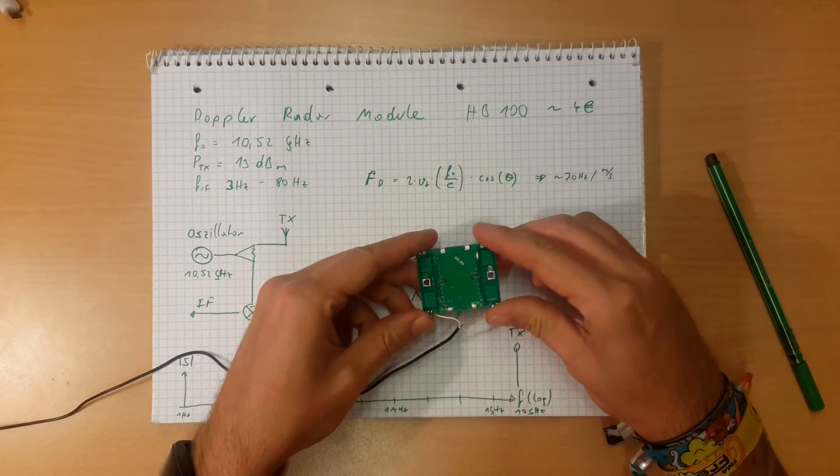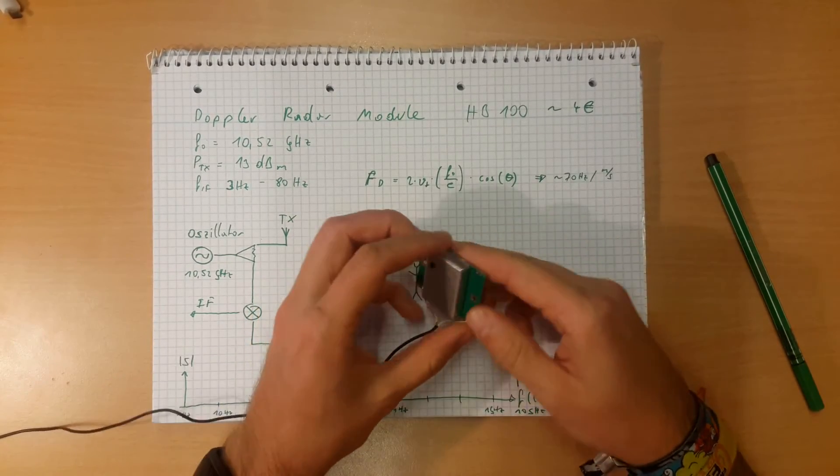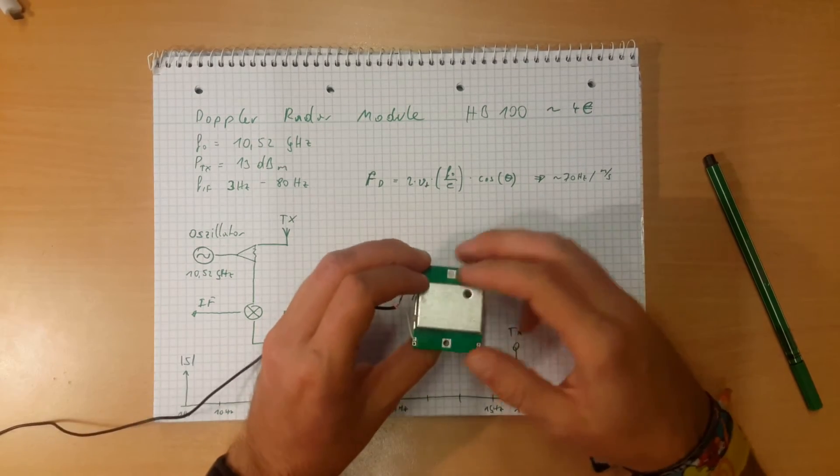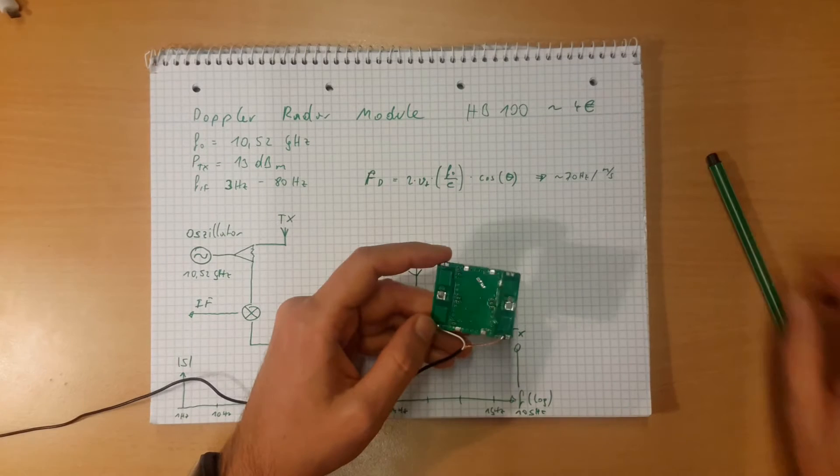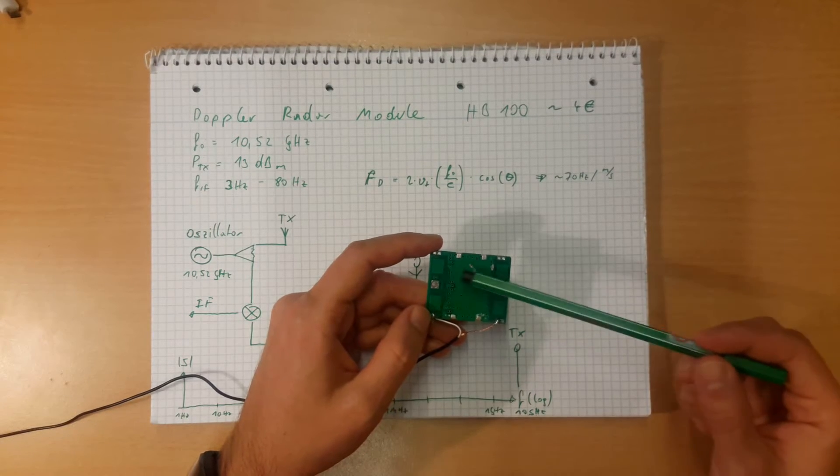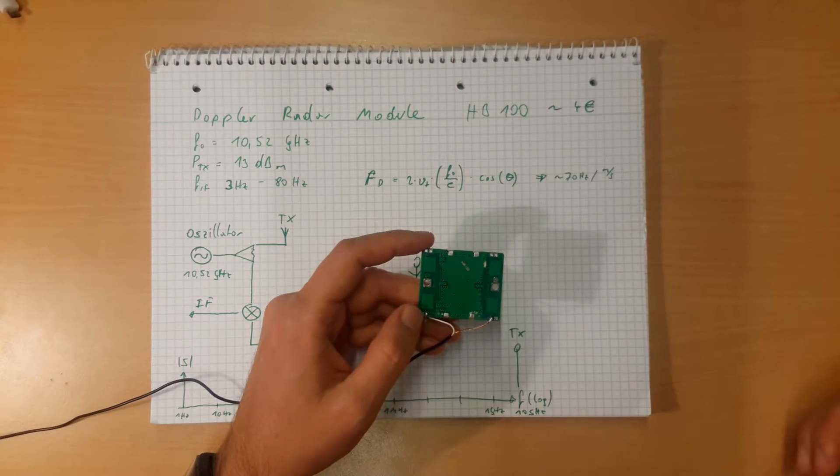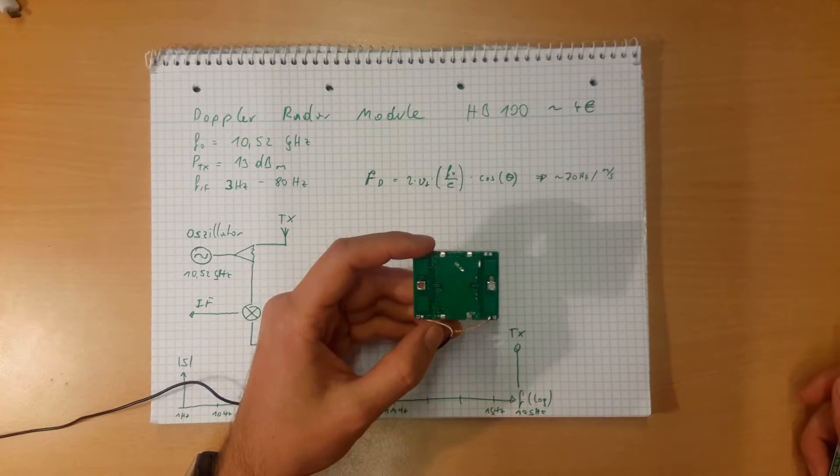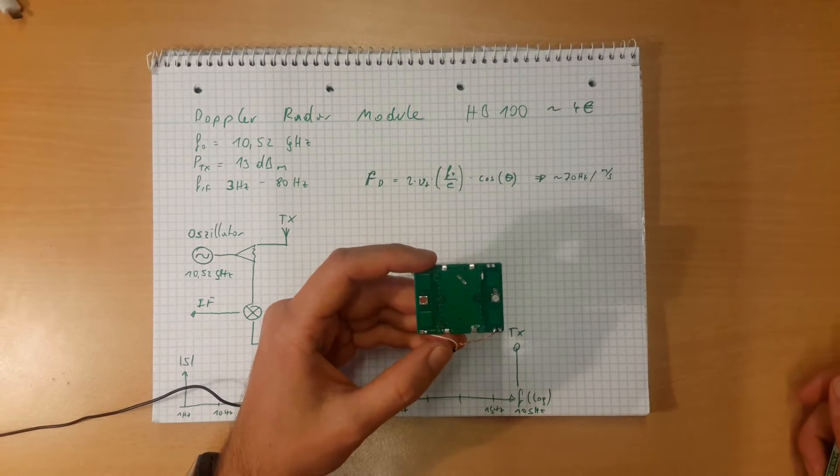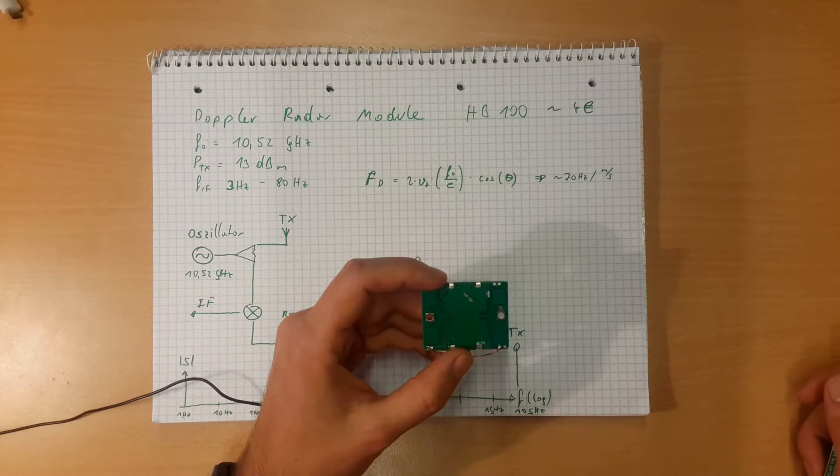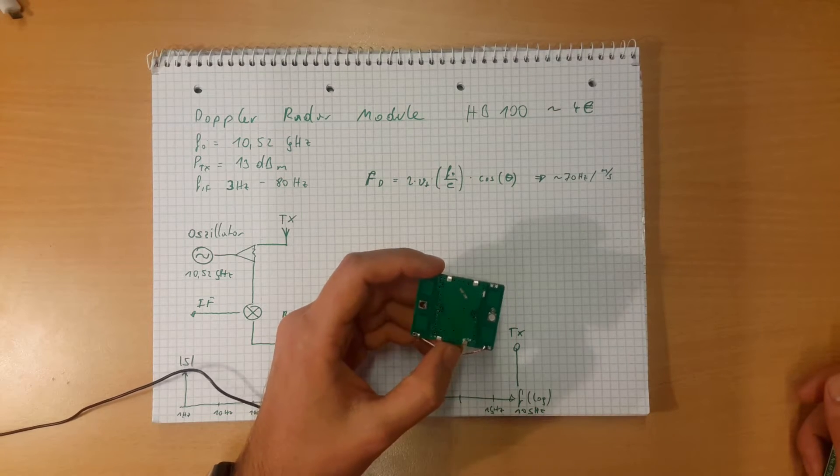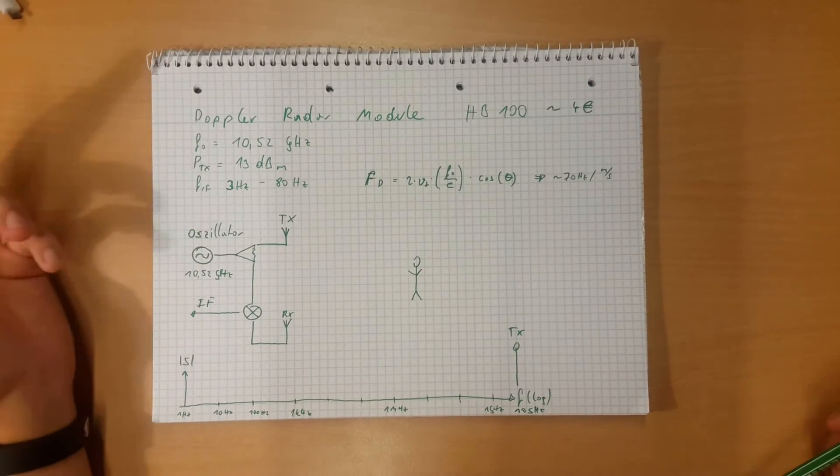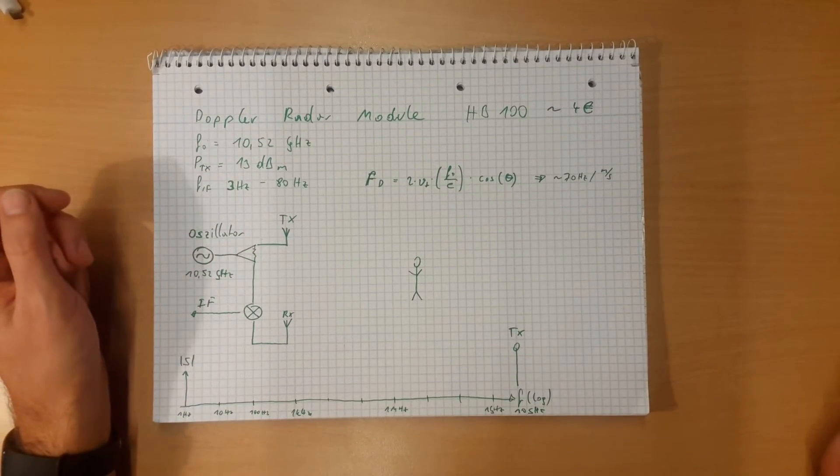As you can see here it is a rather neat little tiny radar module which comes with the shielding can and some patch antennas here. Before we go into it and talk about the circuitry I want to give you a brief introduction about the operational theory behind it and what it can do for you. It is working on the Doppler principle.